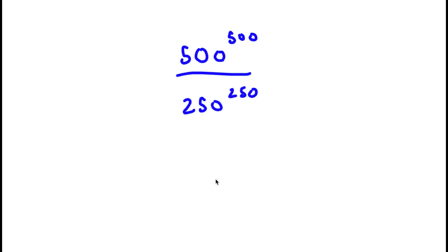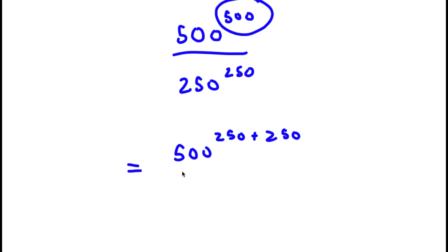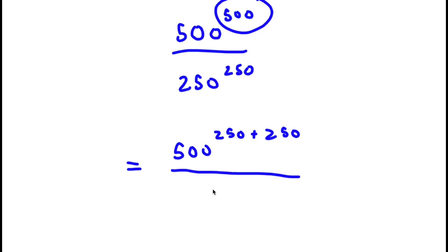In this problem, I have 500 to the power of 500 over 250 to the power of 250. What I'm first going to do is rewrite the exponent 500 as 250 plus 250. So now I have 500 to the power of 250 plus 250 over 250 to the power of 250.